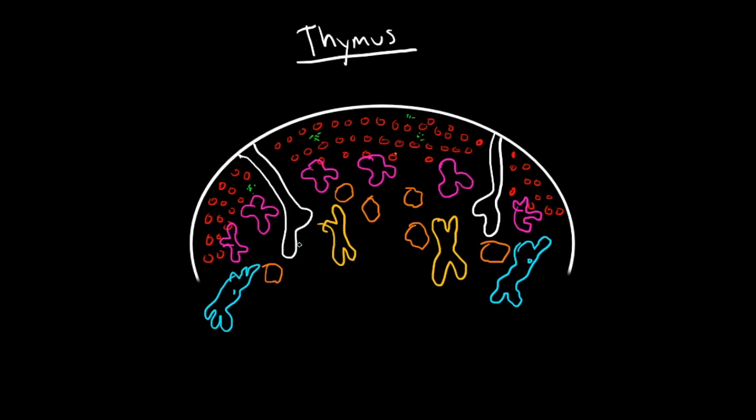So it is the site of T and NKT cell maturation. The thymic structure is pretty complex, as you can see from this drawing. I'm going to label everything here. But it's basically a bilobed encapsulated organ that has lobules, and it's separated by connective tissue strands.